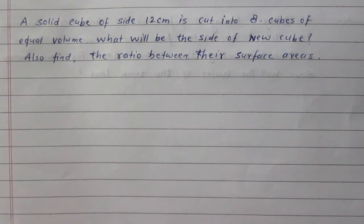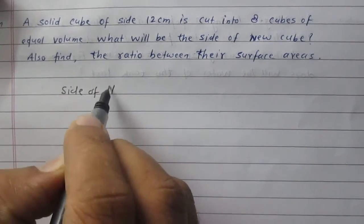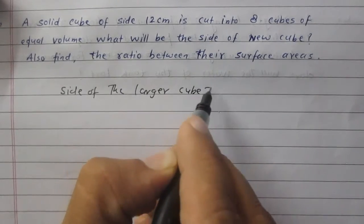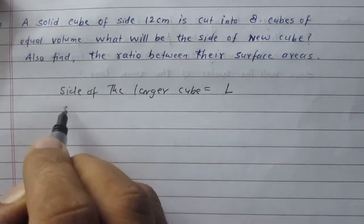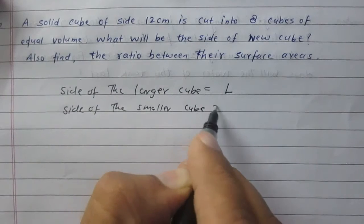We are given that there is a larger cube whose side is 12 cm and we have cut it into 8 small cubes of equal volume. And we are to find the side of the new cube. We will find the ratio between their surface areas. Let us consider that side of the larger cube is L and side of the smaller cube is X.